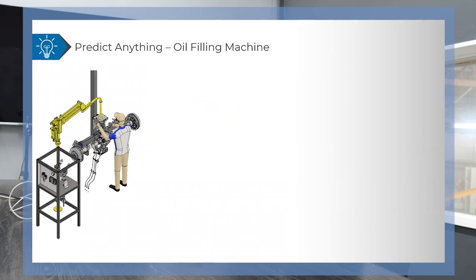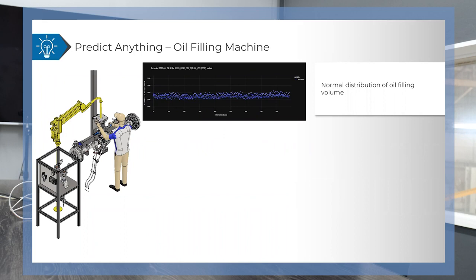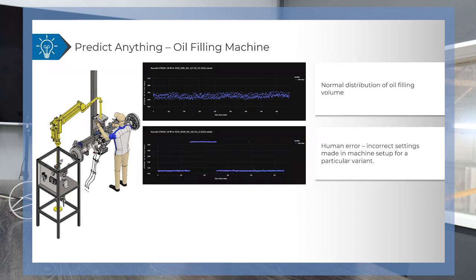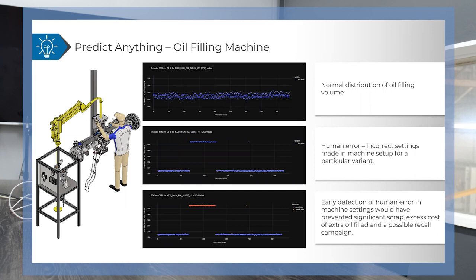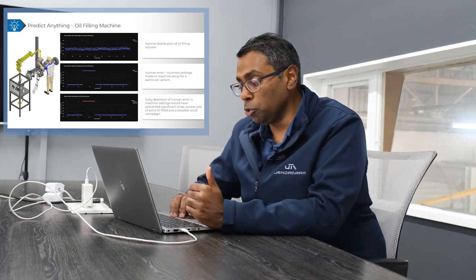The next example is an oil filling machine. The normal oil filling level should be between 1,040 and 1,060 millilitres. Due to human error some settings went wrong and there was a sudden jump — the machine was filling over 1.5 litres of oil. At that time we didn't have a machine learning model in place, but had we had an anomaly detector monitoring this process, we would have detected the problem much earlier and saved a huge amount of money and stress.